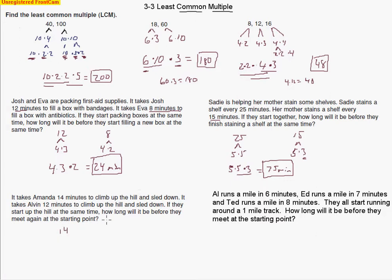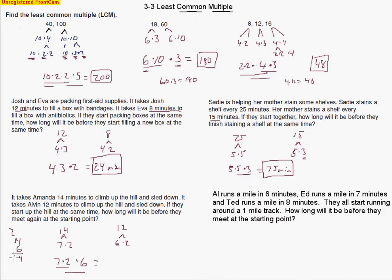It takes Amanda 14 minutes to climb up a hill and sled down, and Alvin 12 minutes. If they start at the same time, how long before they meet again at the starting point? We factor: 2 goes into both, giving 7 and 6 for each. 7 is prime and 6 has no factors in common with 7. Taking the bigger number, 7 times 2 is 14, then we need the 6 to make 12. So 14 times 6 is 84. They'll meet again after 84 minutes.